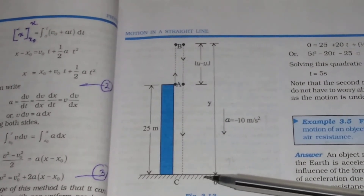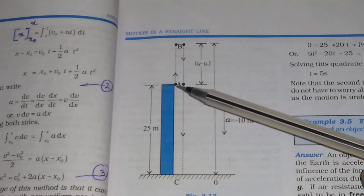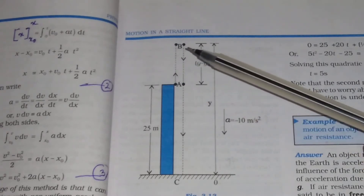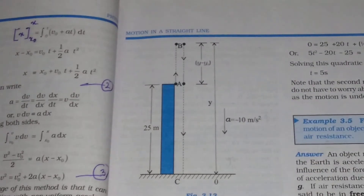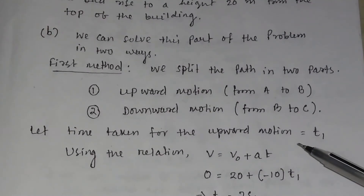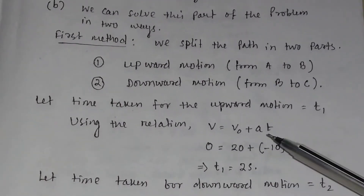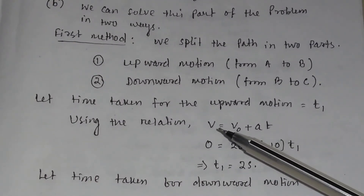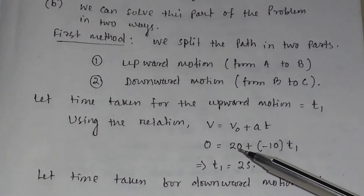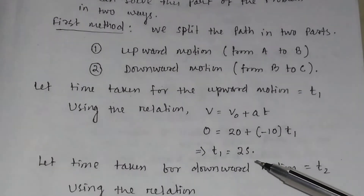Let us first calculate the total time using the first method — the time taken by the ball going from A to B and then from B to C. Suppose the time taken for the upward motion from A to B is T1. Using the relation v equals v₀ plus aT, with final velocity at the highest point B equal to 0, initial velocity 20 meters per second, and acceleration minus 10 meters per second squared, T1 will be equal to 2 seconds.